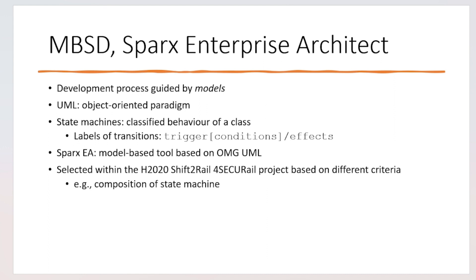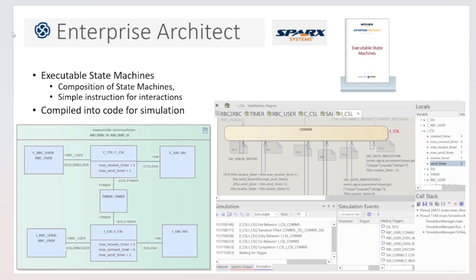SPARX Enterprise Architect is an industrial tool based on OMG UML. Part of this work was done in the context of an H2020 Shift2Rail project called 4SECUR Rail. Within the project, we selected SPARX EA based on criteria such as significantly lower license costs compared to other tools, especially when the code generator is included. We were specifically interested in composing state machines, and SPARX EA provides a simple artifact called executable state machines, used to compose different instantiations of state machines.